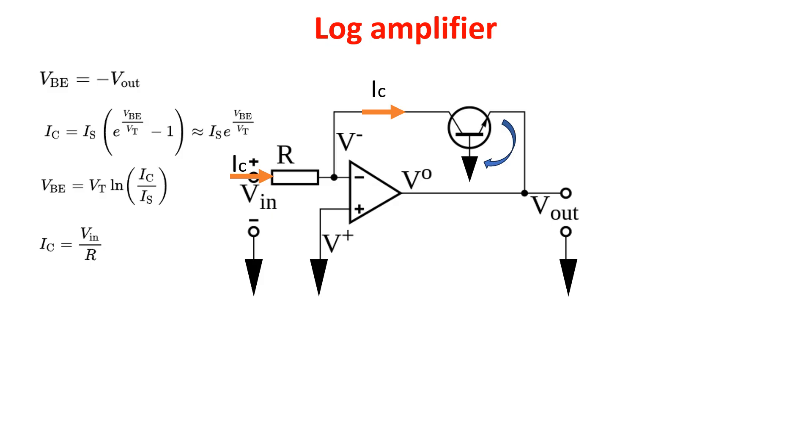So, putting this relation into the BJT equation and remembering that Vbe is equal to minus Vout, we get this final equation. You see the output voltage is proportional to the natural log of the input voltage.